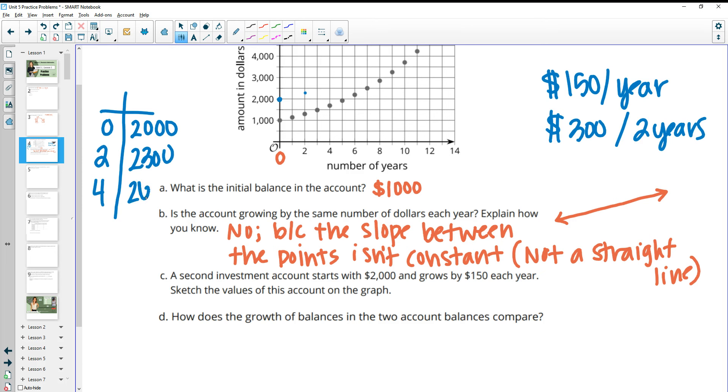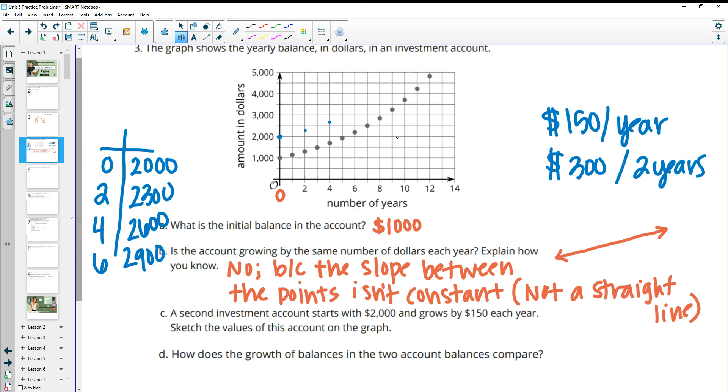So then after two years, it's going to be at 2,300. So I'll plot that just below 2,500. At 4, it would be at 2,600, so just above 2,500. At 6, it'd be at 2,900. At 8, it'd be at 3,200. At 9, it would be at 3,500, or sorry, at 10.